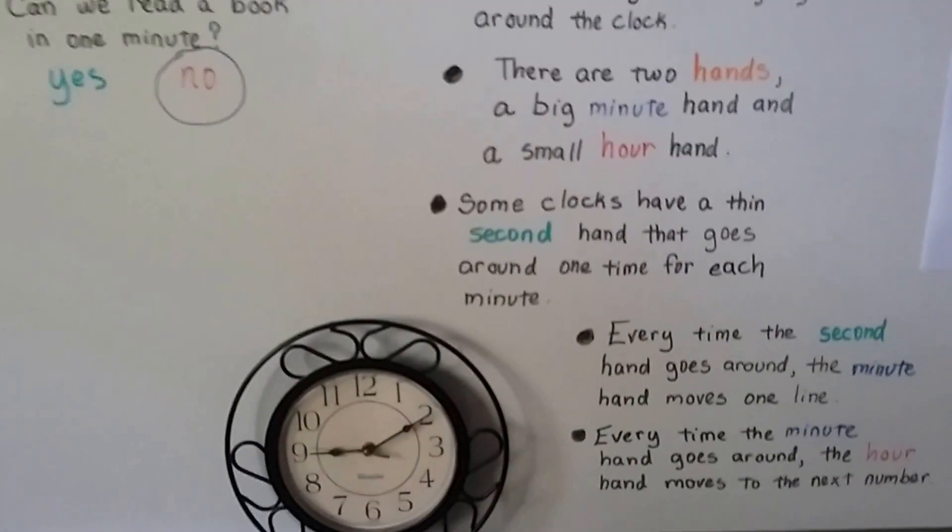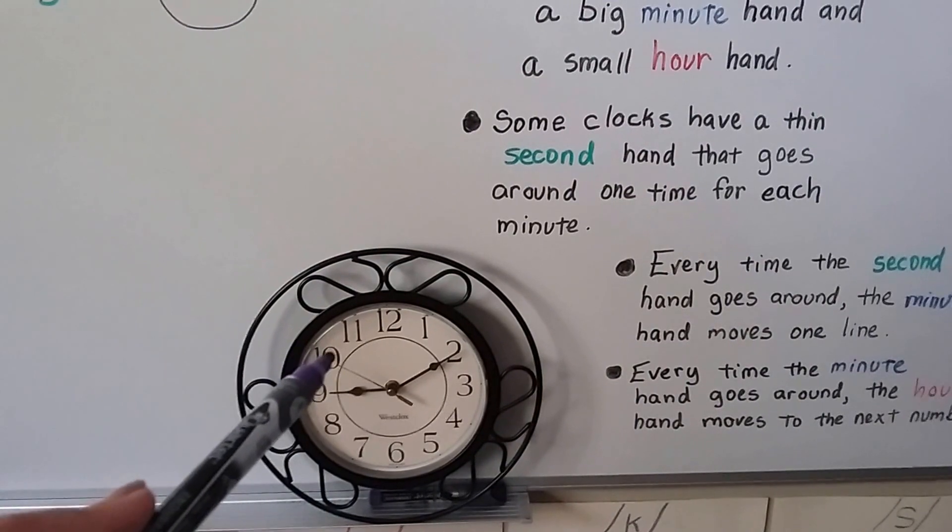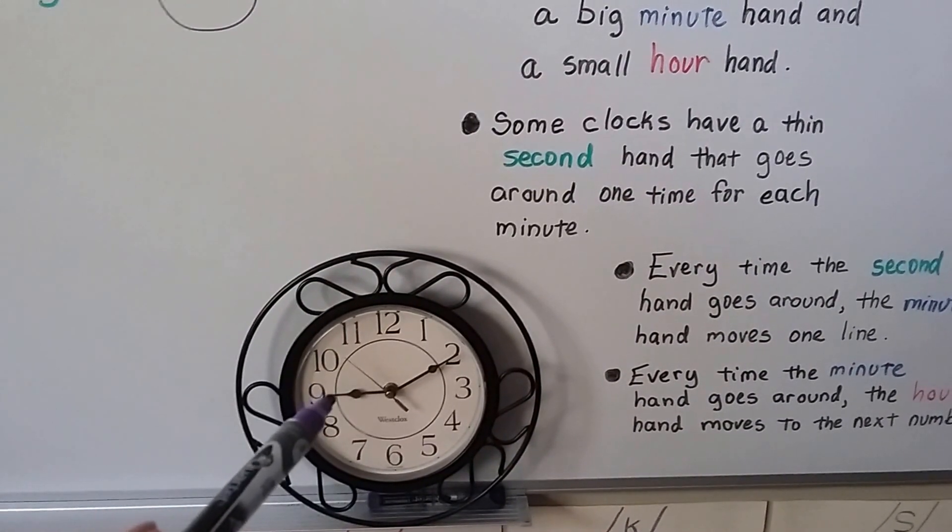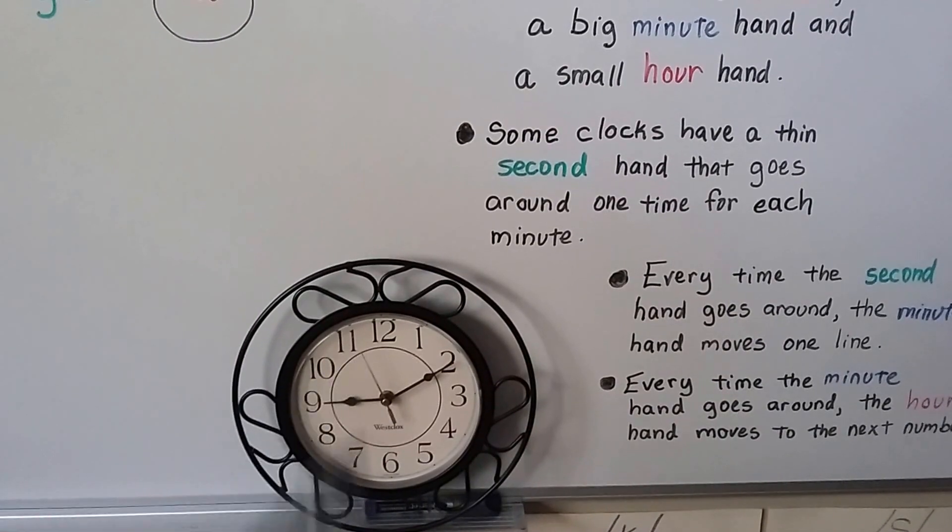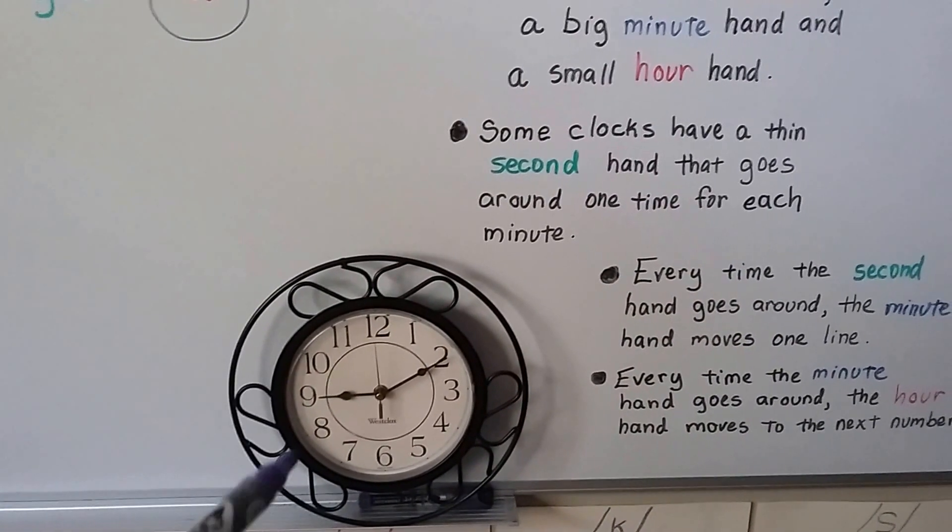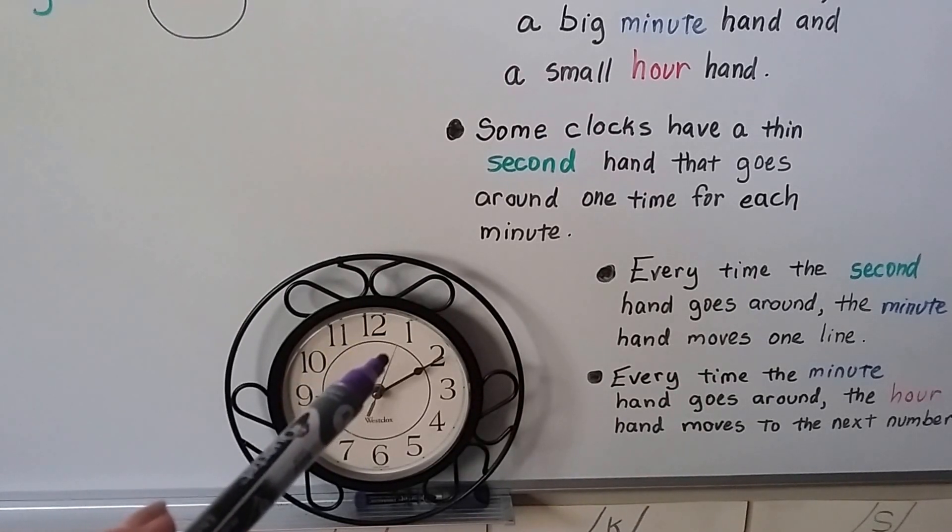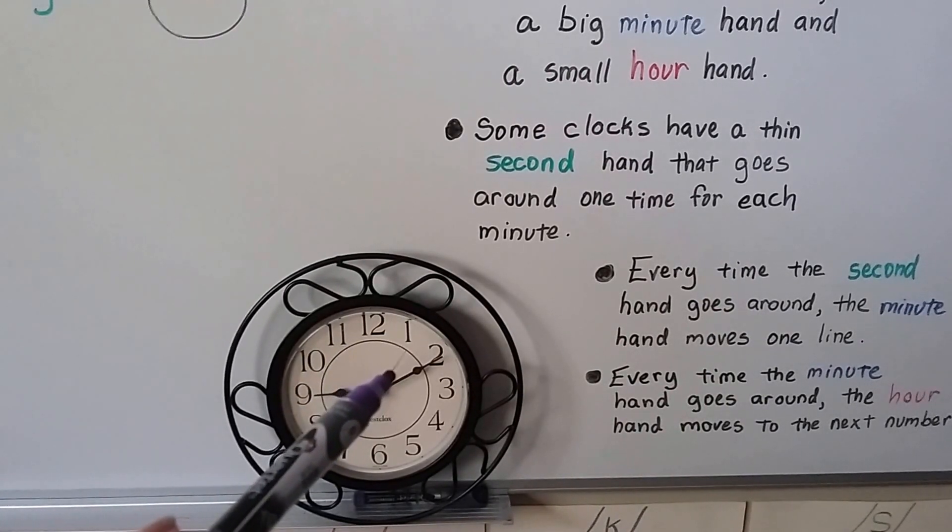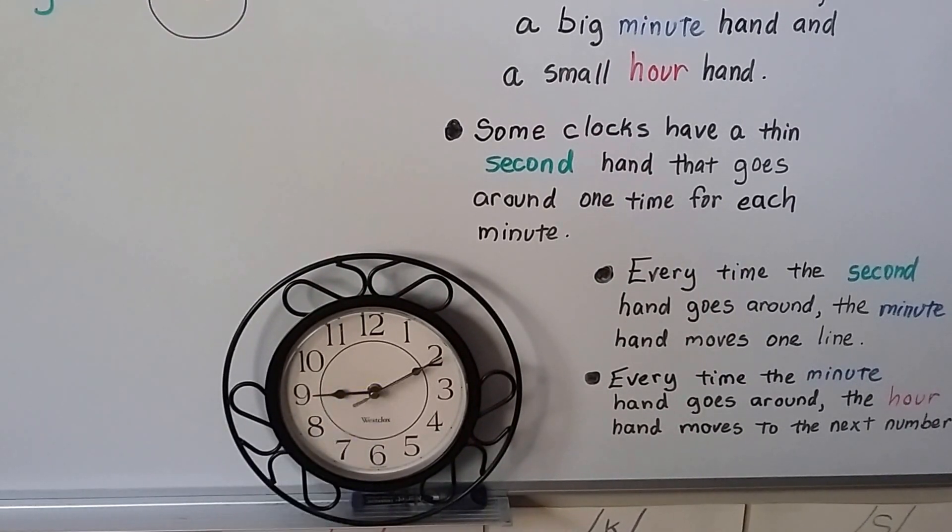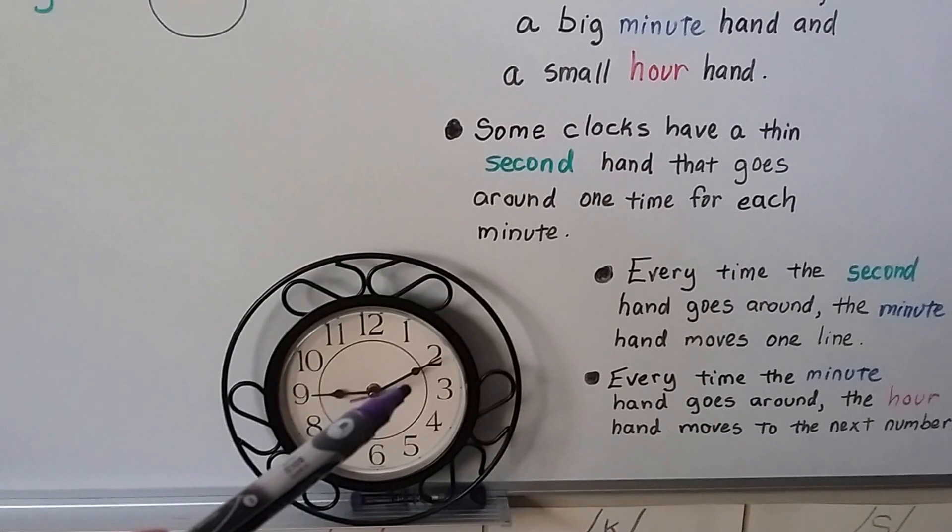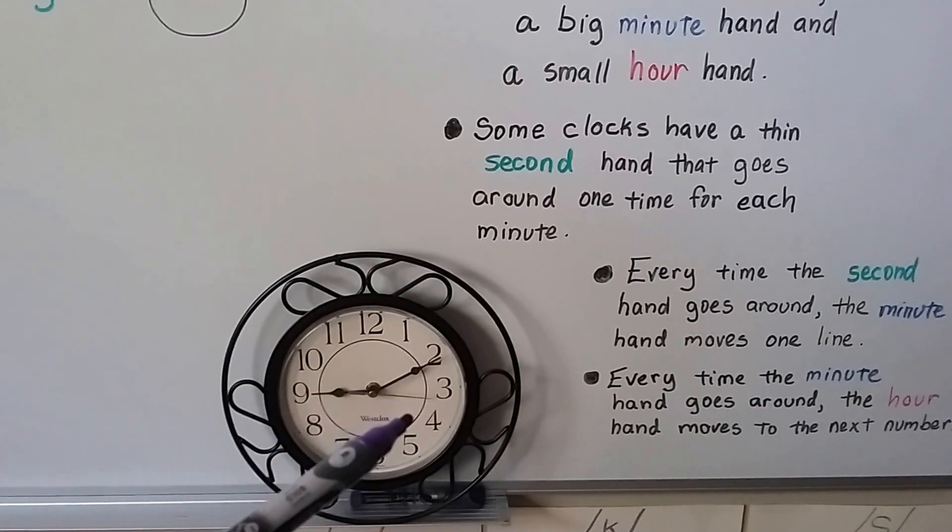And some clocks have a second hand that goes around. My clock here has a second hand. Here's the hour hand. It's shorter. The minute hand is longer. And see the second hand? It goes around one time, and the time we can count to 60. See? That'd be about 5, 6, 7, 8, 9, 10. See? And mine kind of stops each time a second goes by.